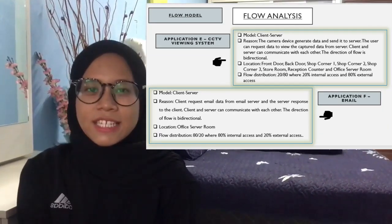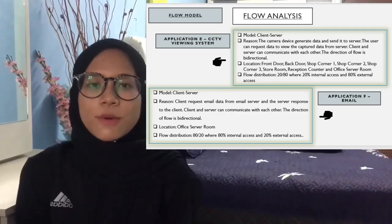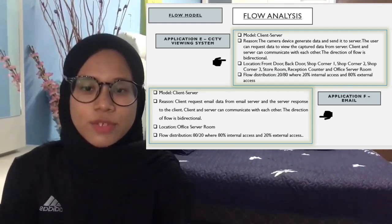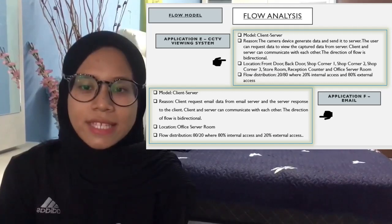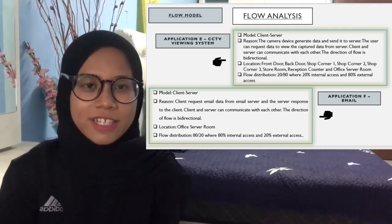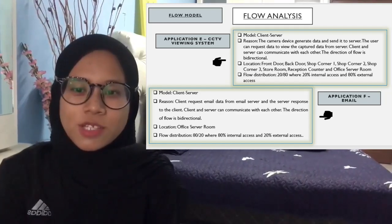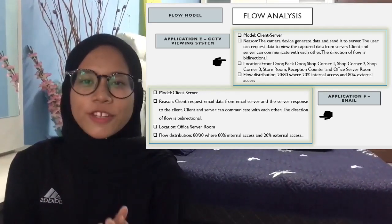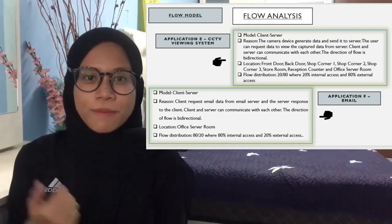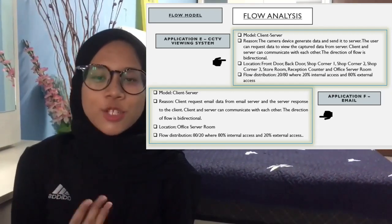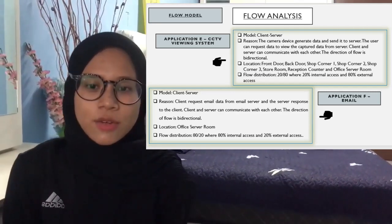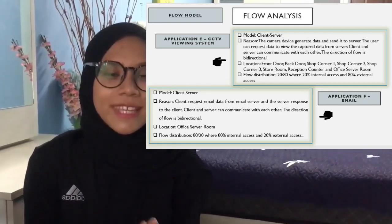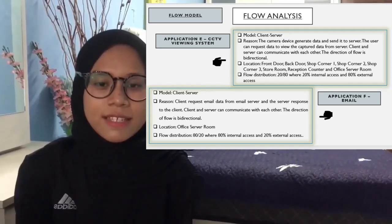Application E is the CCTV viewing system. Its model is client-server because the camera devices generate data and send it to the server, and users can request data to view the captured footage. Client and server communicate bi-directionally. Locations are front door, back door, shop corners 1, 2, and 3, storeroom, reception counter, and office server room. The flow distribution is 20/80 — 20% internal and 80% external access.